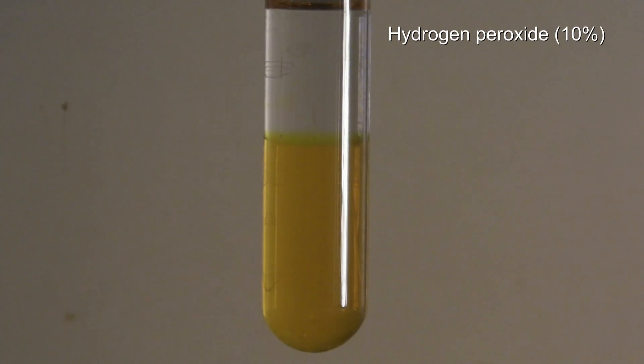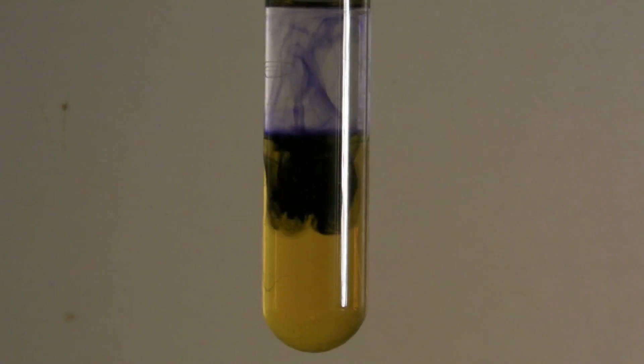Now some of the 10% hydrogen peroxide is added again. The dichromate reacts with hydrogen peroxide to form the very unstable blue peroxyl complex.